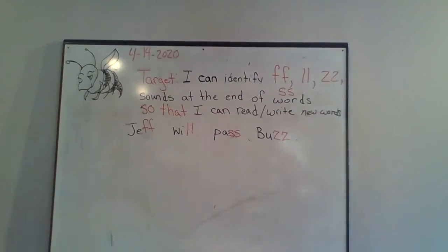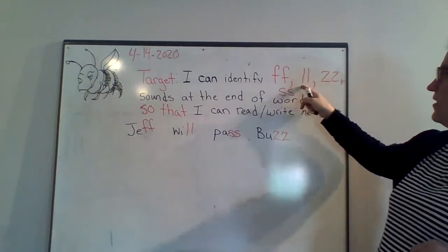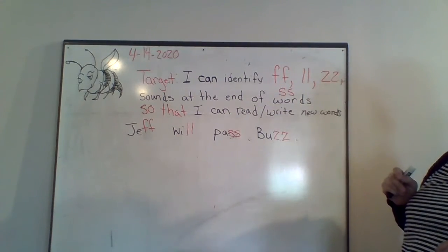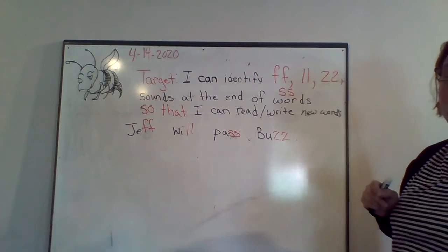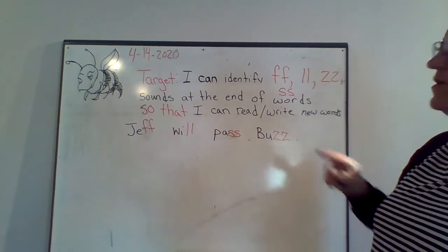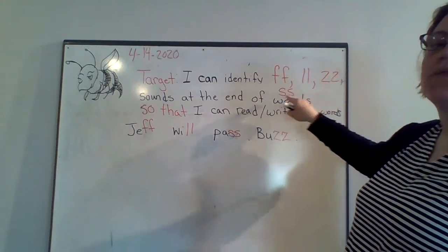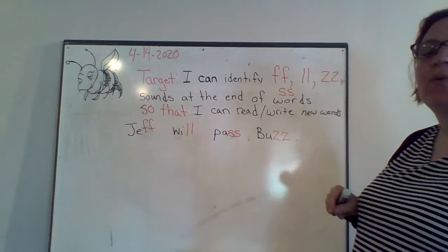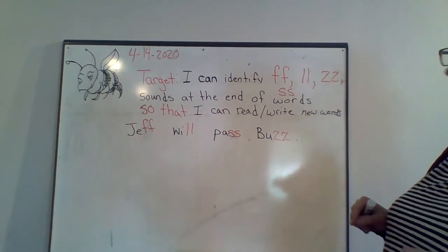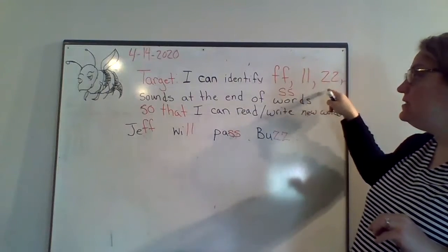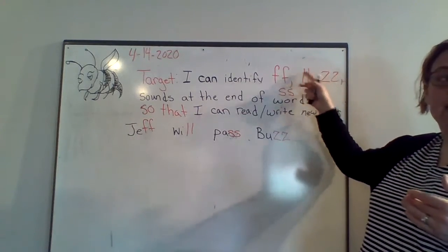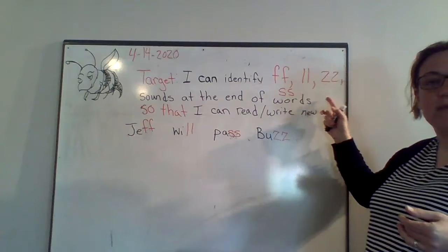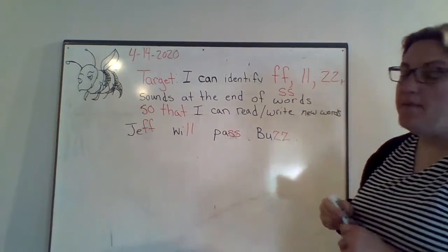Now I'm going to bring you back up here so you can see my board and our target for today. It says, I can identify the F-F, L-L, Z-Z, and S-S sounds at the end of words so that I can read and write new words. Now, at the end of words, when we hear that F sound, or the L, or the Z, or the S, it's usually going to be a double letter. F-F, L-L, Z-Z, S-S. That's just how it works with these four ending letters. When it's at the end of a word, it's usually going to be doubled.